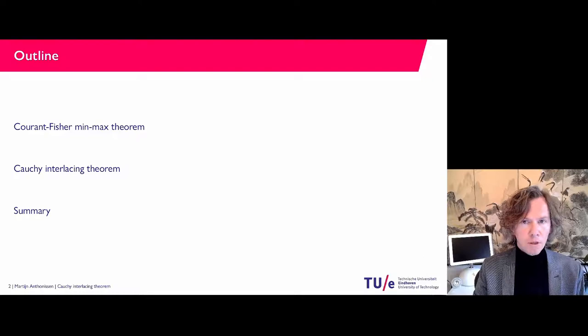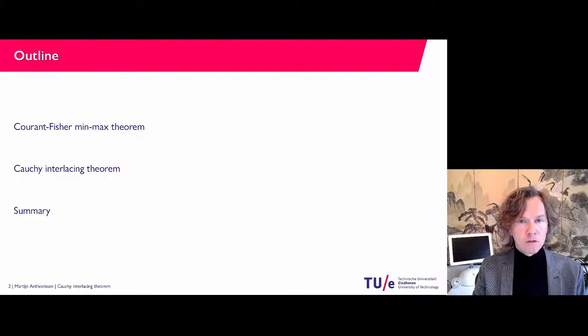This video has only few slides but it's quite heavy on proofs. We will look first at the Courant-Fisher min-max theorem, which is a characterization of eigenvalues in terms of a minimum and a maximum. That is going to be the bulk of this video — the proof of this theorem — and then we will use it to prove the Cauchy interlacing theorem. I'll also briefly recap what the Cauchy interlacing theorem tells us, and end with a summary.